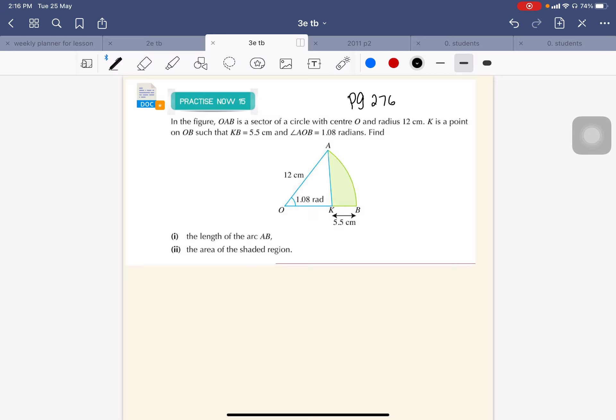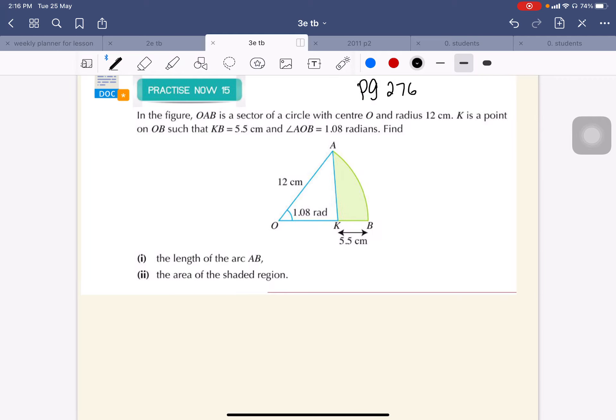Let's look at how to solve this question. First of all, OAB is the arc of a circle, meaning this is the arc.